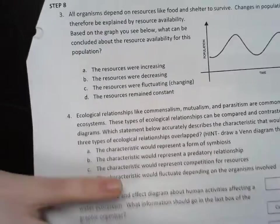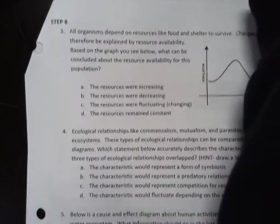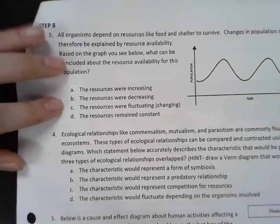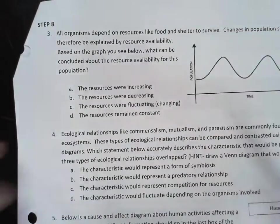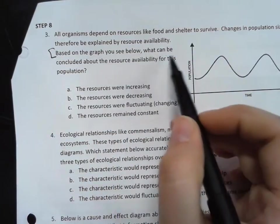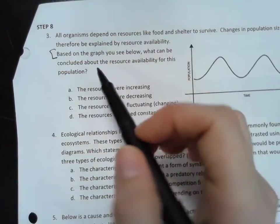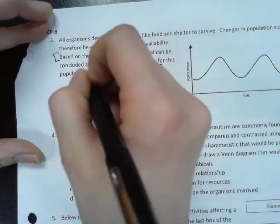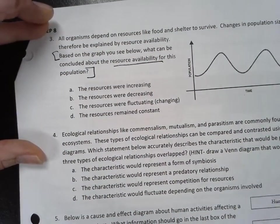Alright, so I'm gonna really quickly go over these ecology practice questions that you should have done on Friday. So question three is asking, based on the graph you see, what can be concluded about the resource availability for this population?